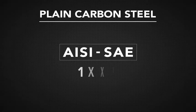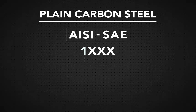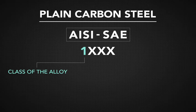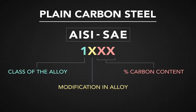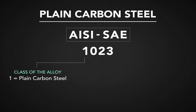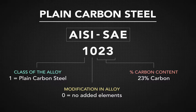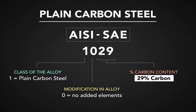AISI/SAE designations use four numbers to describe what is inside plain carbon steel. The first number is 1, which signifies plain carbon steel. The second number shows if there is another element present, and the last two numbers are the percentage of carbon. For example, steel labeled 1023 is a plain carbon steel with no added element and contains 0.23% carbon. The contents of 1029 steel are the same, except it has 0.29% carbon. These are both low carbon steels.